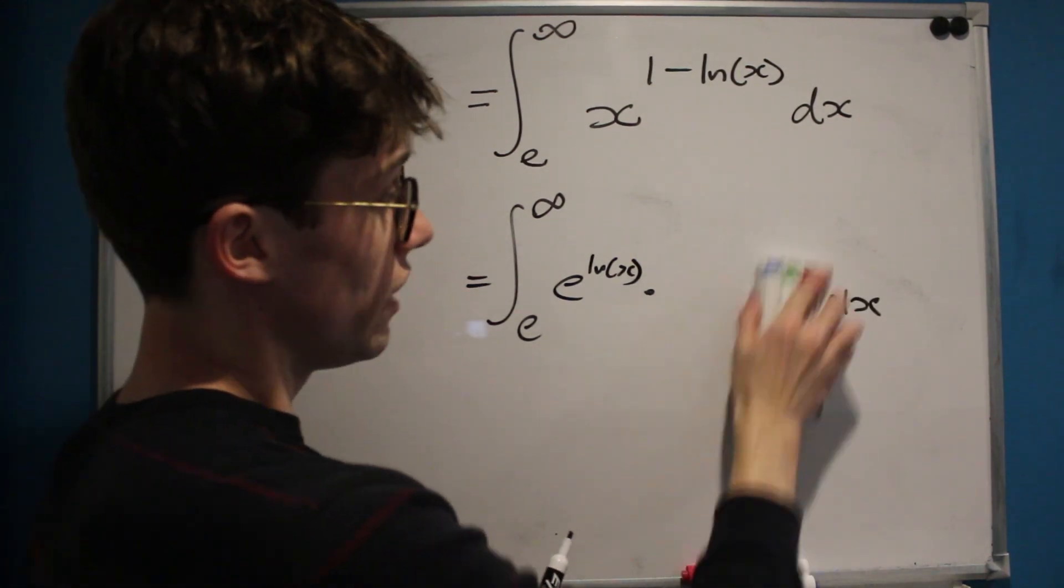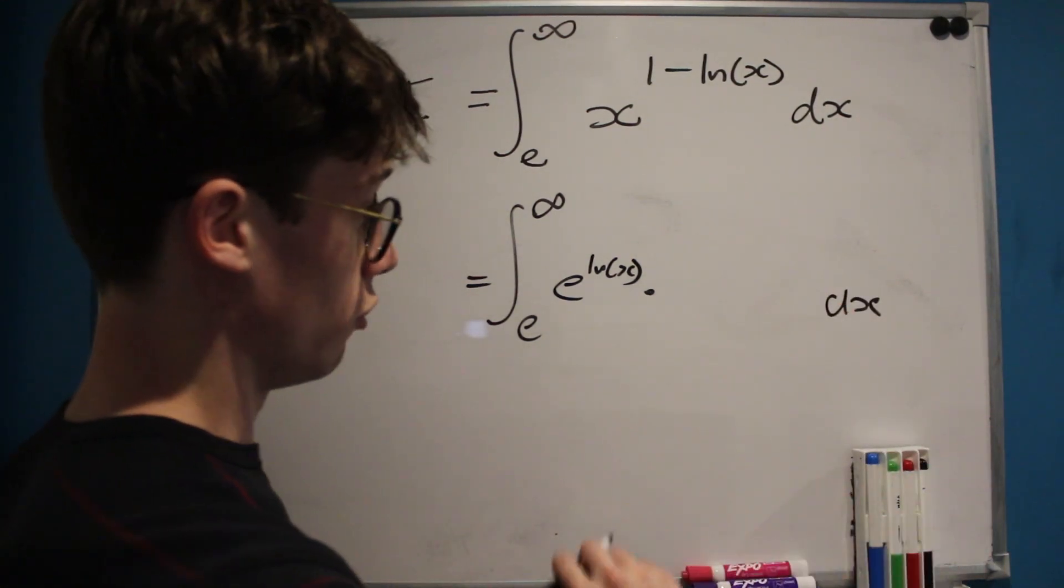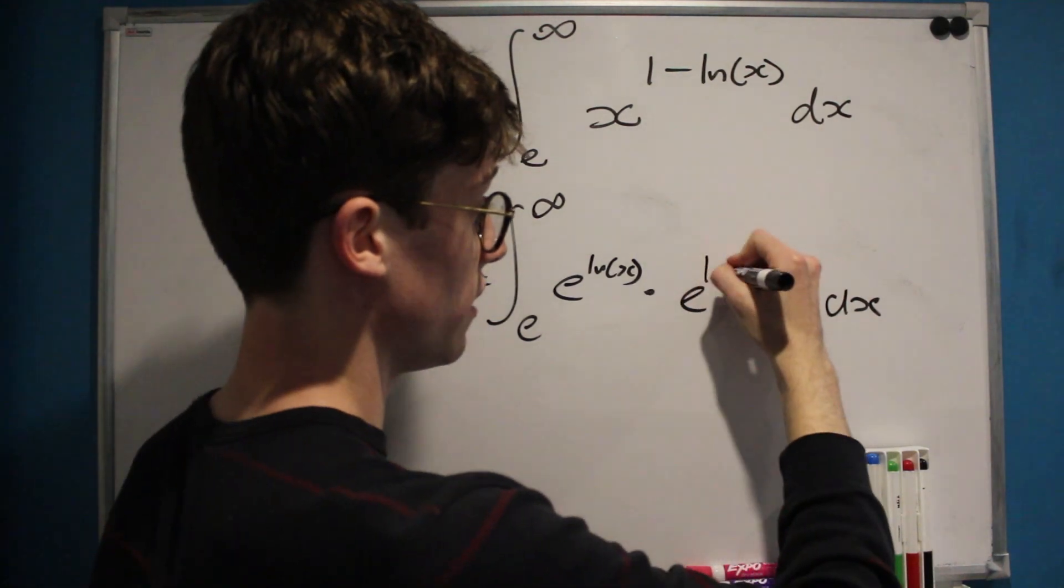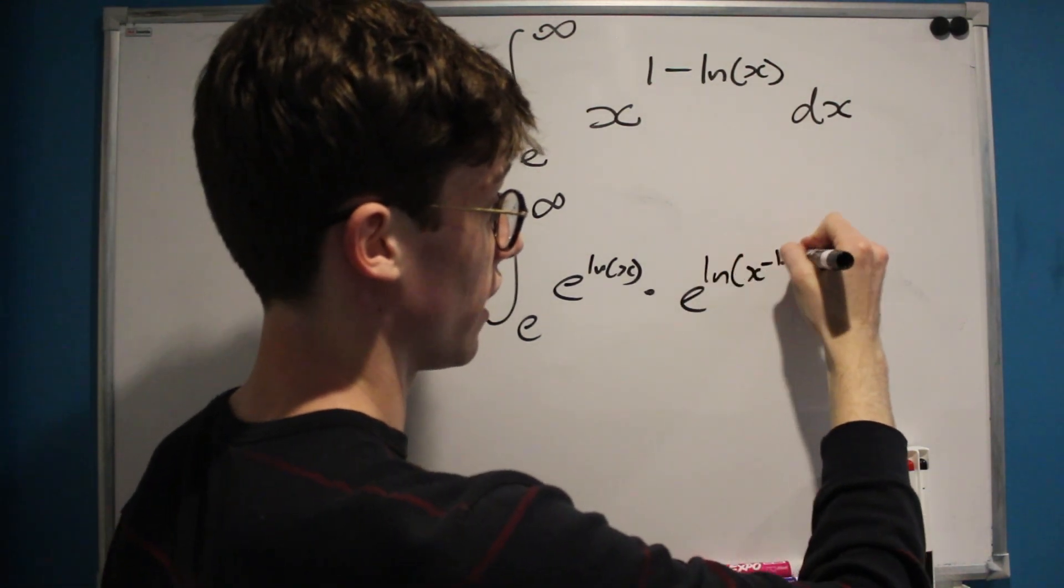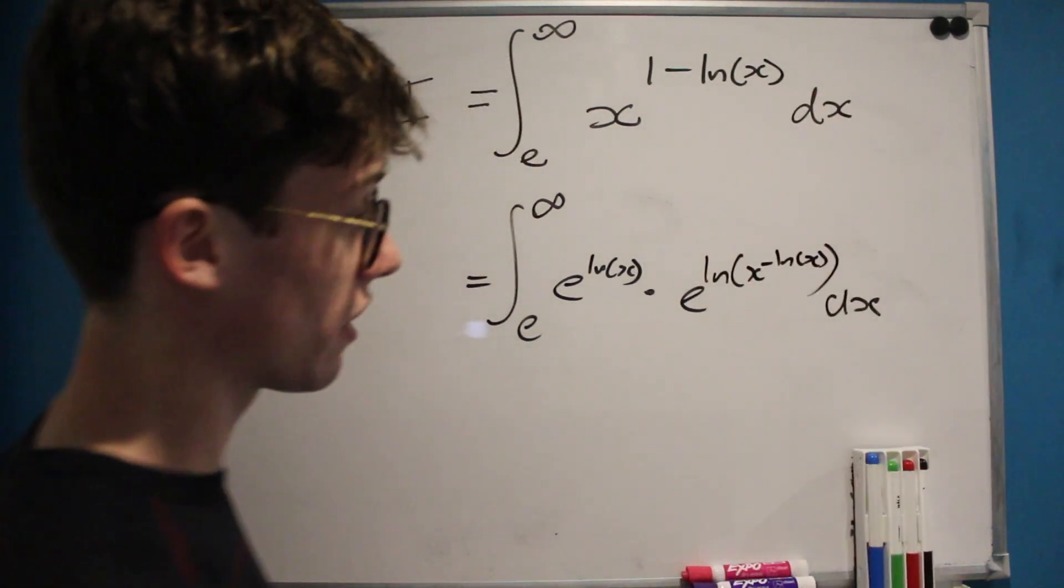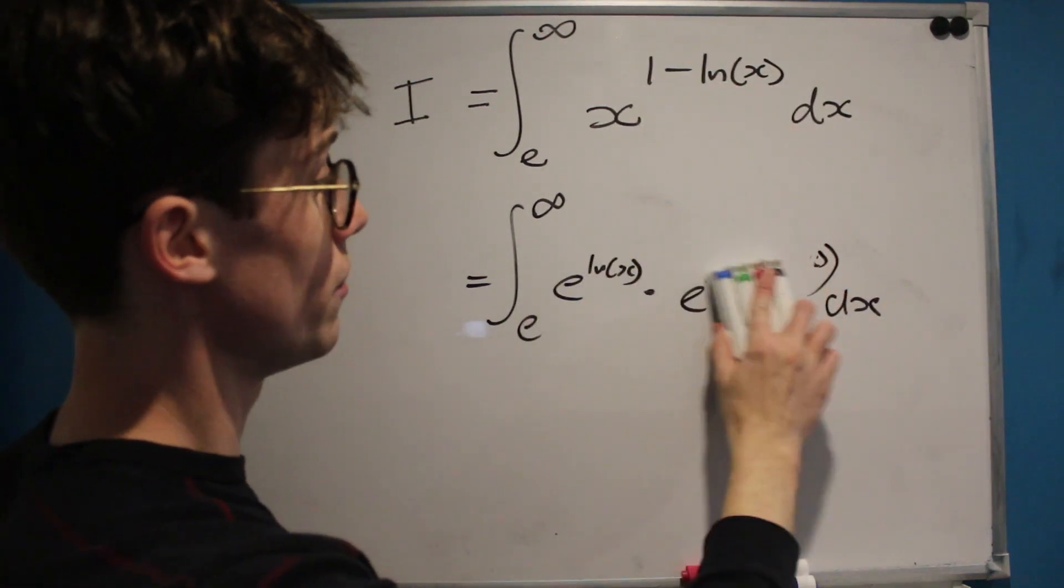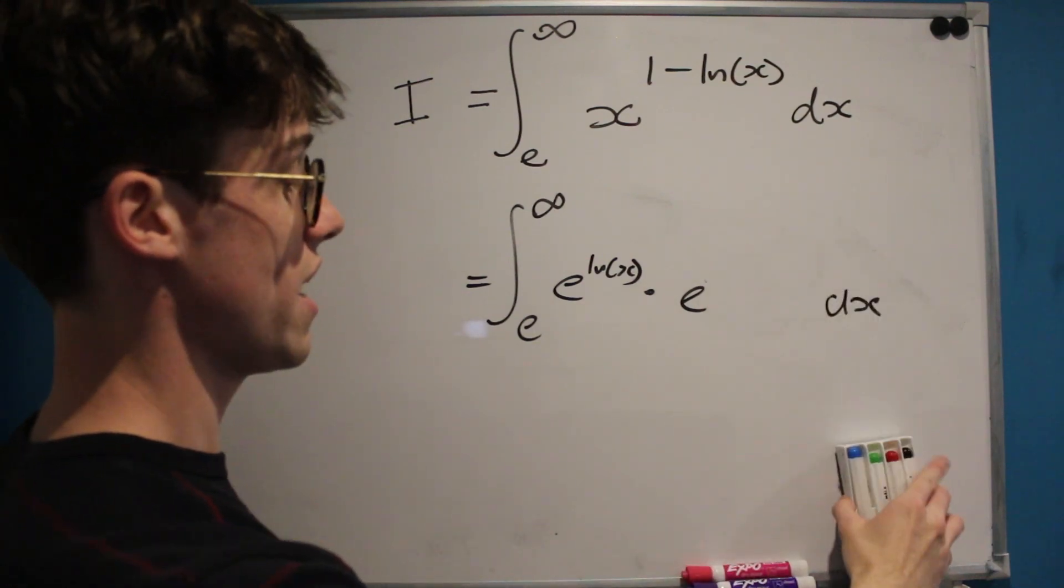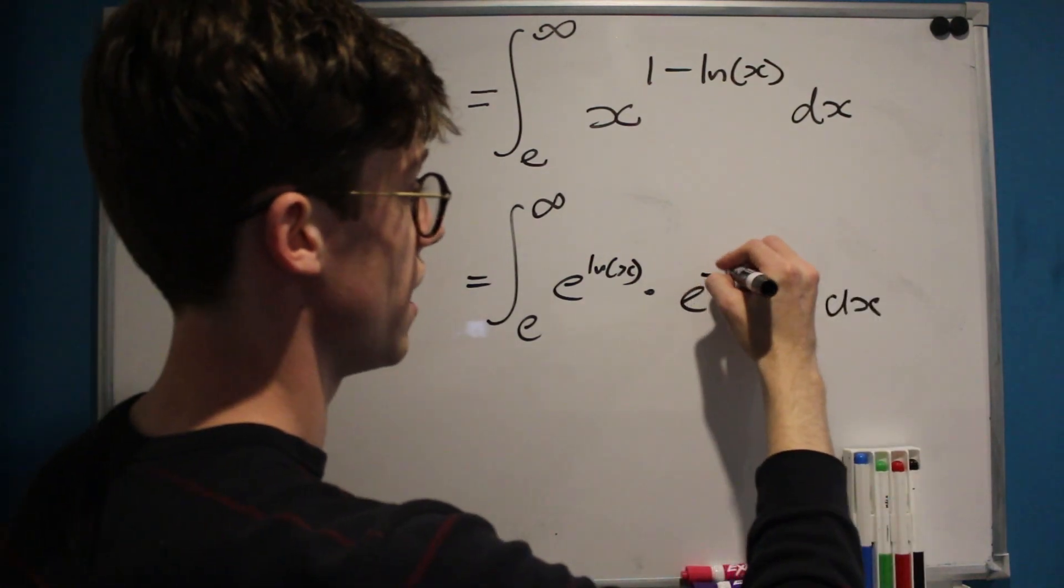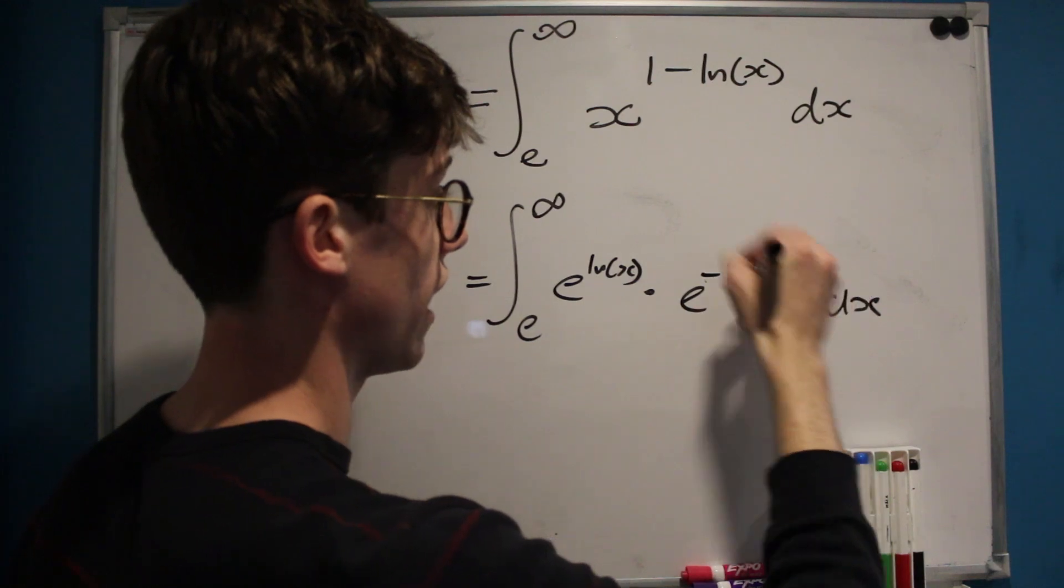and similarly we can write x to the negative natural log of x as e to the natural log of x to the negative natural log of x. And whenever we have a power within the natural log we can bring it down, so really this is going to become ln x times negative ln x, or in other words negative ln squared x.